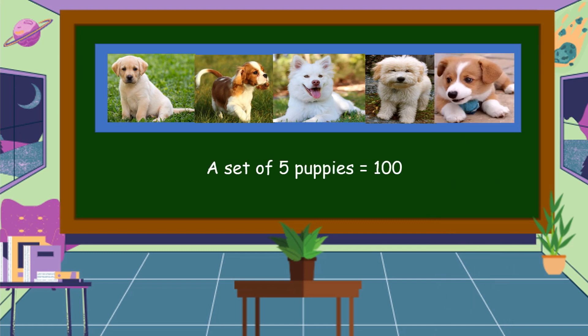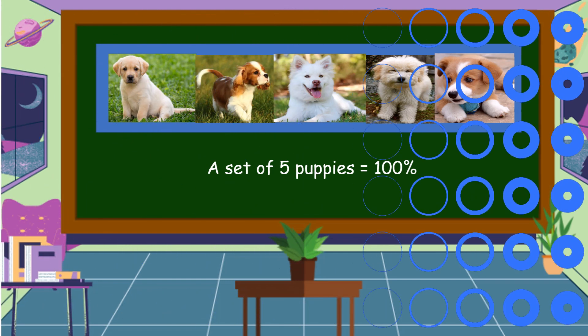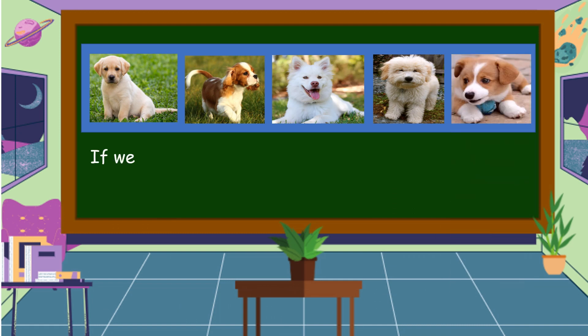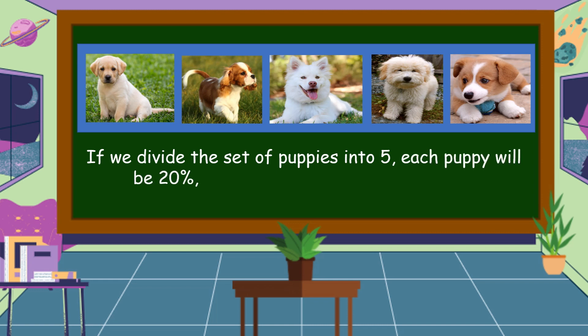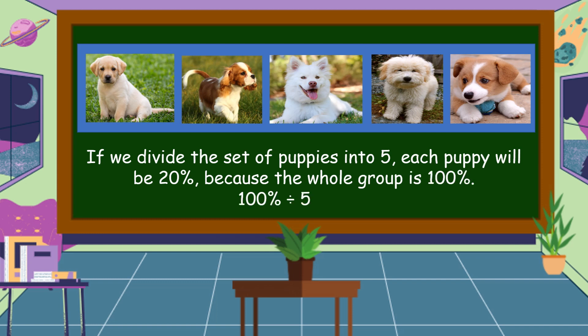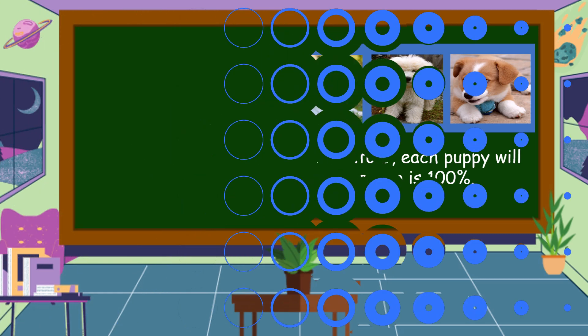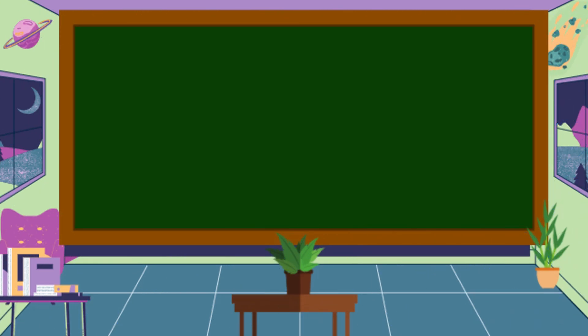A set of five puppies is equal to 100 percent. If we divide the set of puppies into five, each puppy will be 20 percent, because the whole group is 100 percent and 100 divided by five is equal to 20 percent.